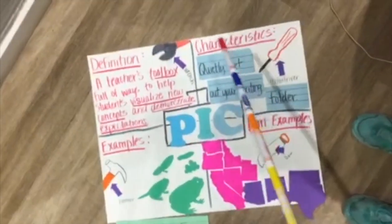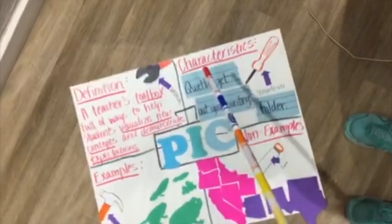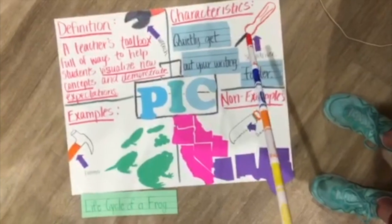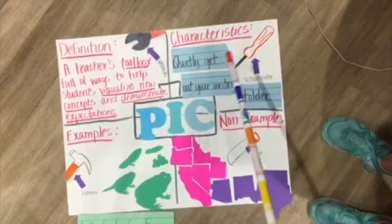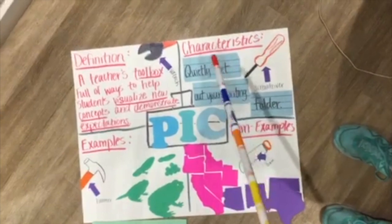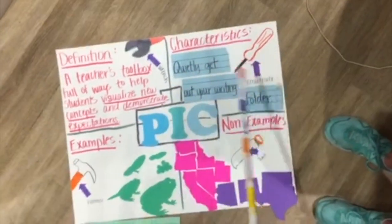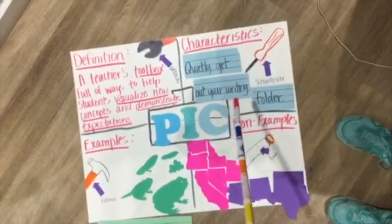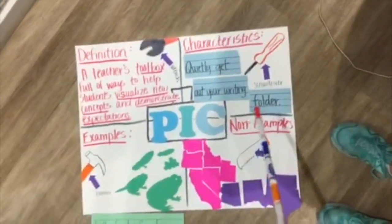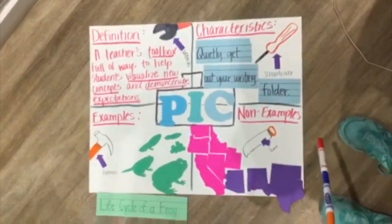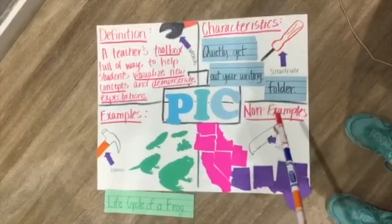Some more characteristics of presenting instructional content is modeling by the teacher to demonstrate his or her expectations. You can do this concisely, as we have displayed right here, by asking your students to quietly get out your writing folder. That displays the model by the teacher — how she wants her students to do exactly as she asks.